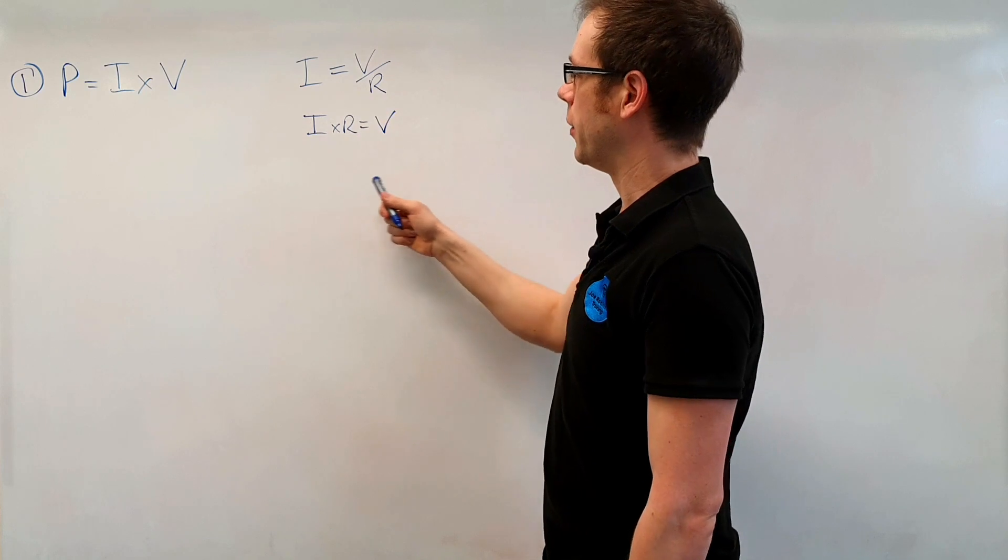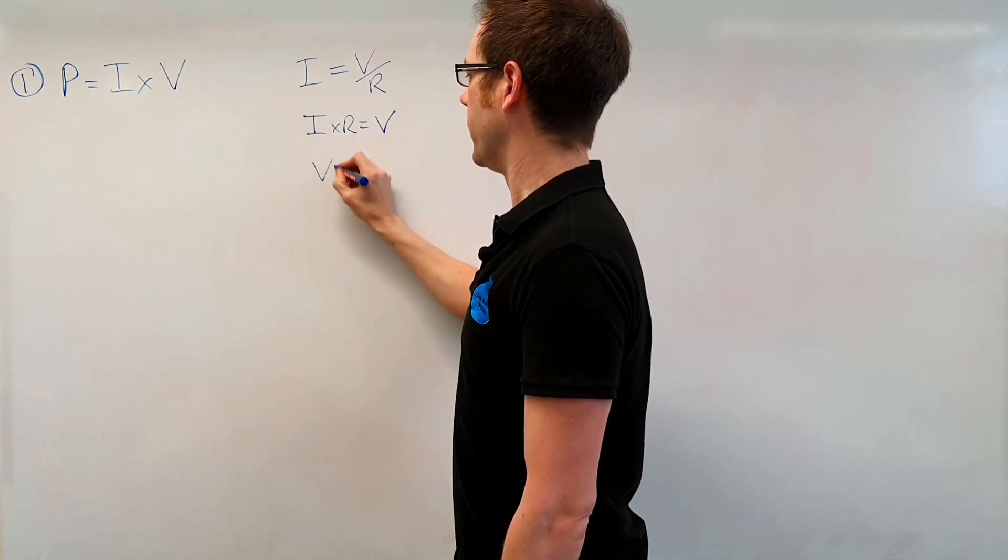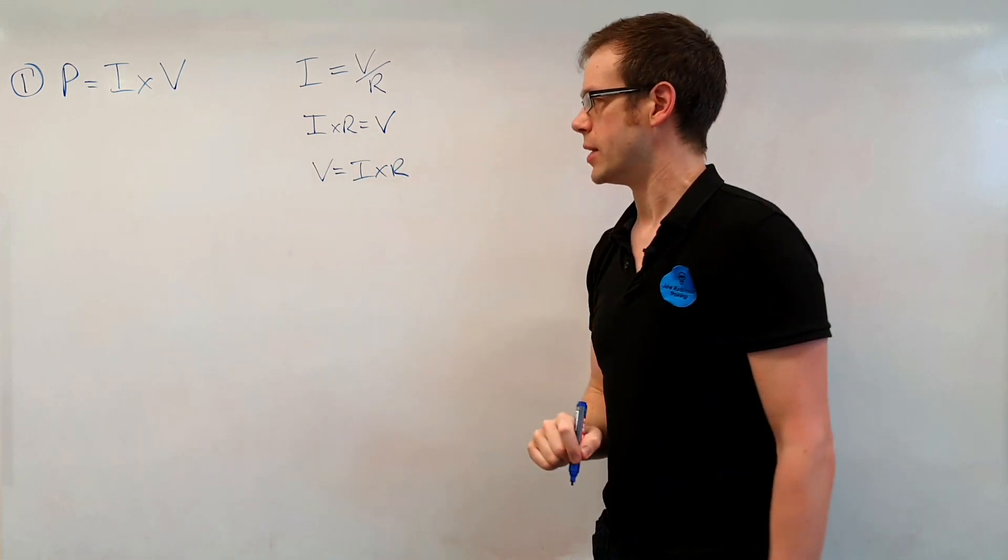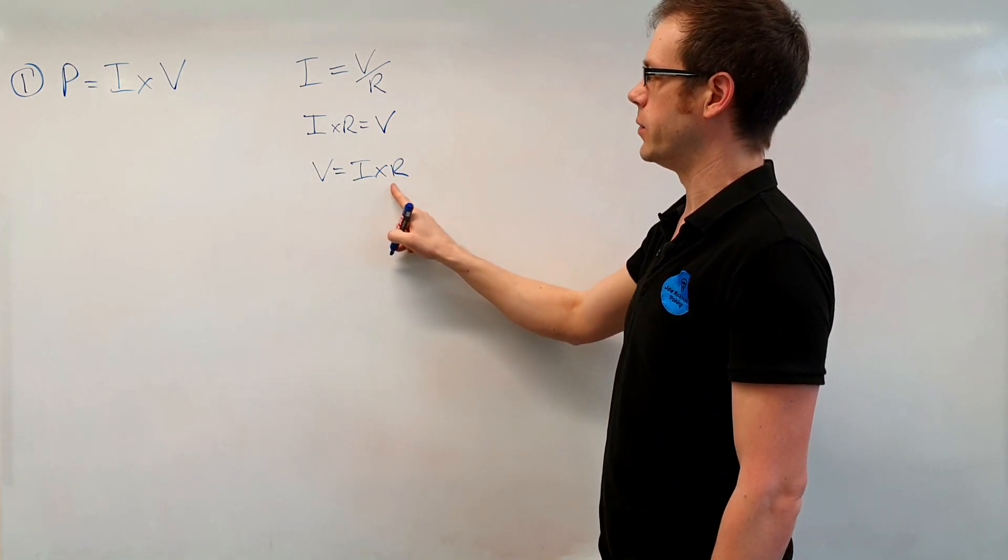Now obviously I need to have the subject on the left because my brain won't let me leave that alone if I try and leave it on the right so I always write it out with the subject on the left. V is equal to I times R.